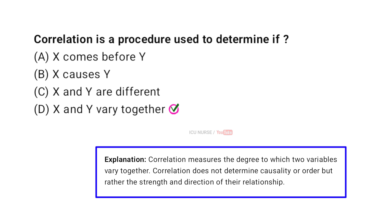Correlation measures the degree to which two variables vary together. Correlation does not determine causality or order, but rather the strength and direction of their relationship.